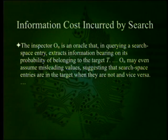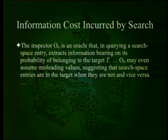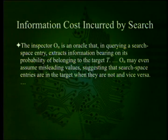The inspector O-alpha is an oracle that, in querying a search space entry, extracts information bearing on its probability of belonging to target T. O-alpha may even assume misleading values — suggesting search space entries are in the target when they are not, and vice versa. For instance, if your prior knowledge says green peas are better, but actually yellow peas are better, then unless you have an appropriate oracle, you're in danger of misleading yourself in the search.